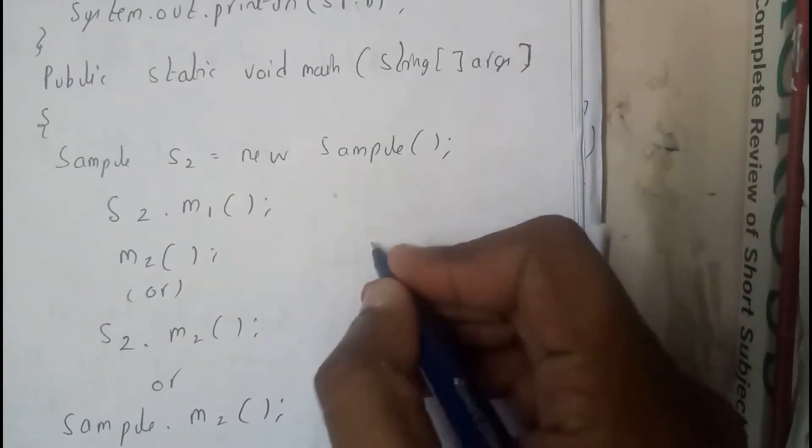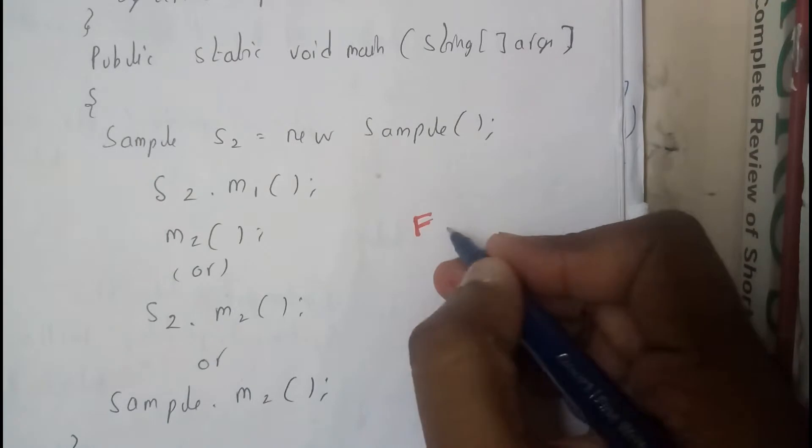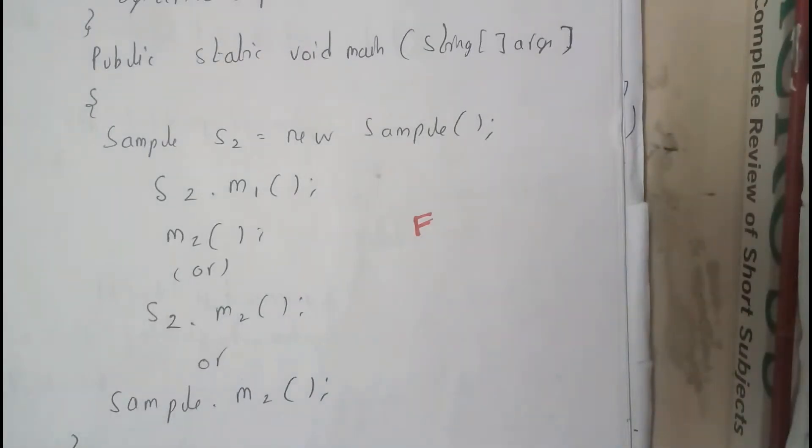In this session, I also want to discuss final methods. Basically, the final methods are nothing but the methods in which the values will not be updated and inheritance is also not possible.